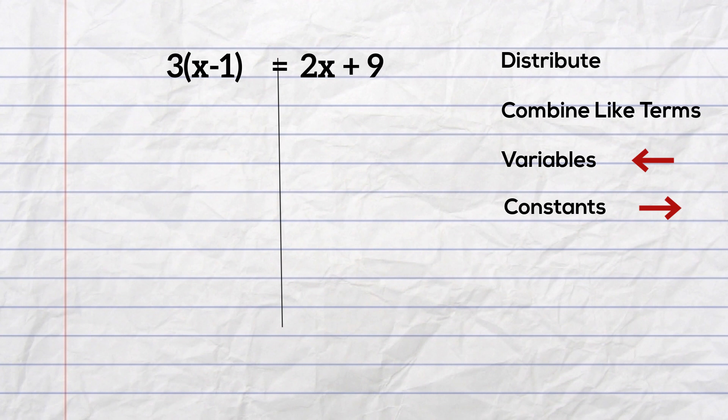So let's first distribute. Whenever you distribute, you multiply what's on the outside of the parentheses by what's on the inside. So I will multiply 3 times x which equals 3x, and 3 times negative 1 which is negative 3.